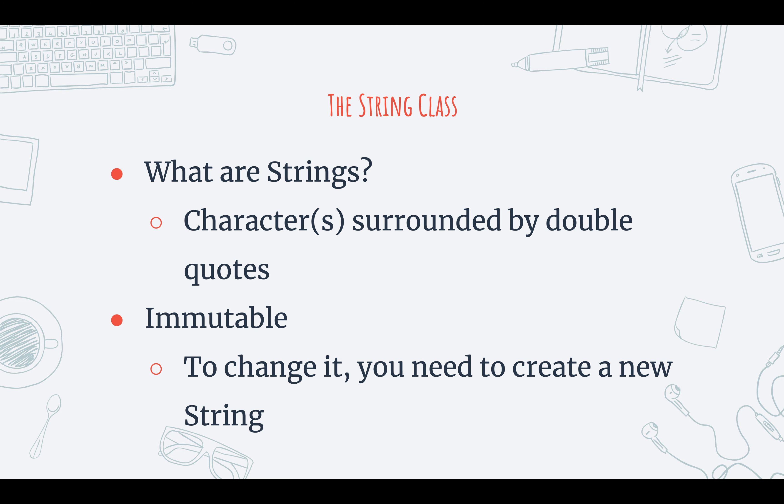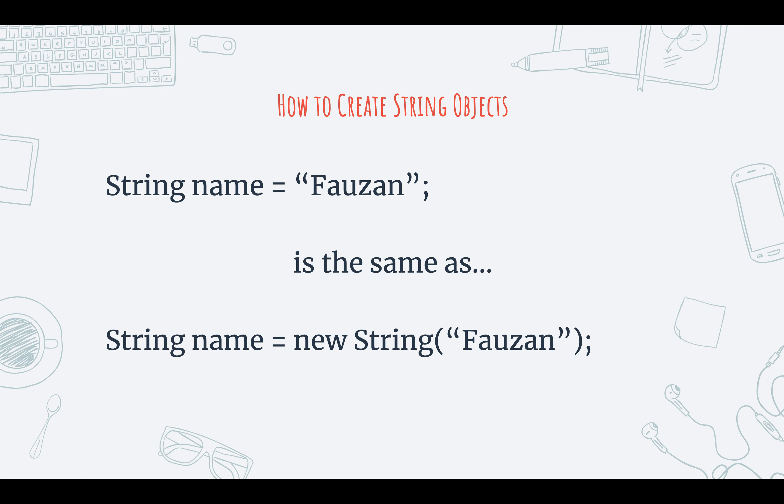Let me provide an example to illustrate my point. This is the standard way that we create a string: we have our data type string, we have an identifier name, and then we have an assignment operator that sets it to the string. What it's actually doing is the third statement you see on screen — `new String()` with the string value as the argument. These two statements are exactly the same. We're so used to the first statement that we don't recognize what's actually happening in the background. So if it's creating a string object, that means the string object has methods that we can use.